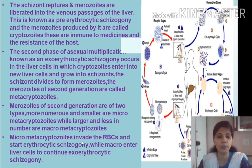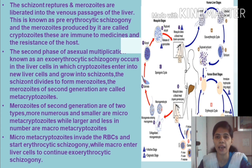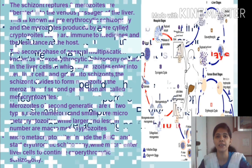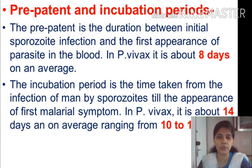Micro-metacryptozoites invade RBCs and start erythrocytic schizogony, while macro-metacryptozoites enter liver cells and continue exo-erythrocytic schizogony. Simultaneously, both the liver and RBCs become infected by these merozoites.